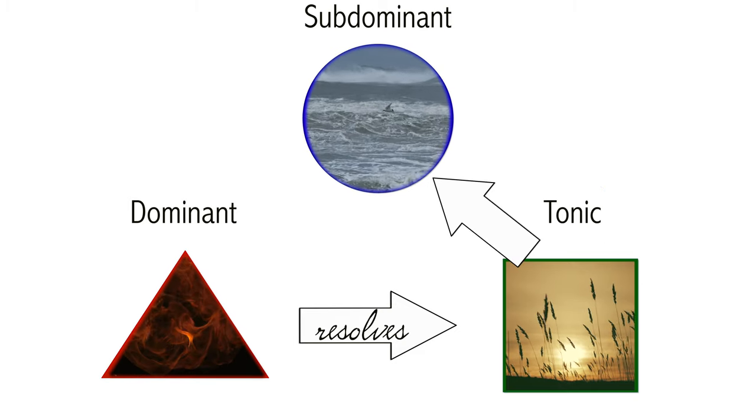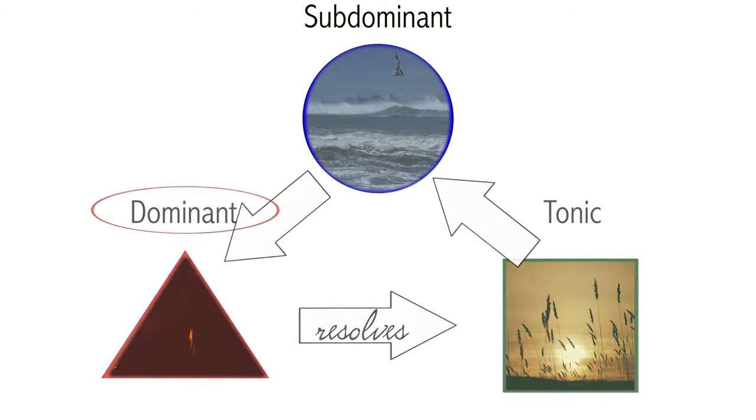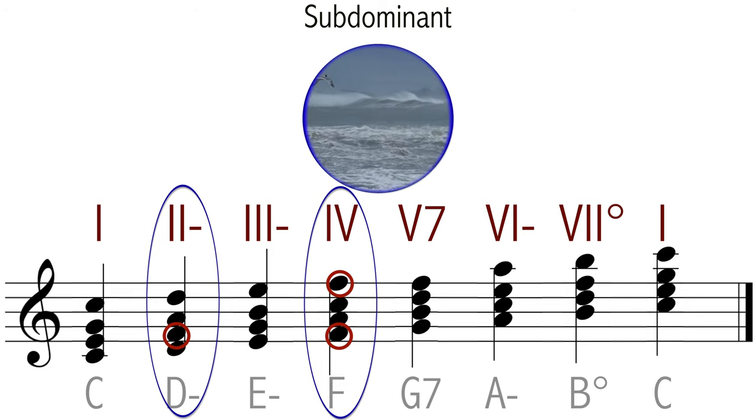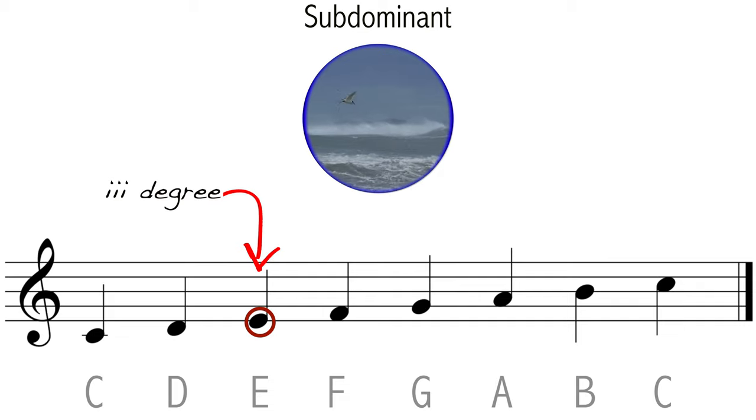Chords in this function sound more tense than tonic chords because they all have the note F, which as we saw previously wants to resolve to E, present in all tonic chords.